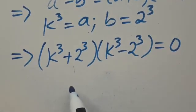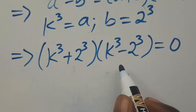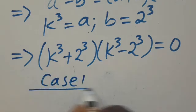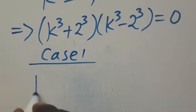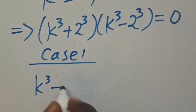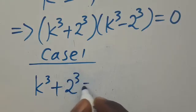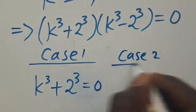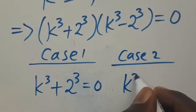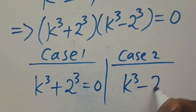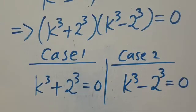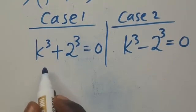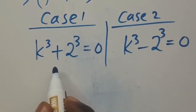What we are saying here is that for this particular expression to be equal to 0, it is either we have, Case 1: k to the power of 30 plus 2 to the power of 30 equals 0, or Case 2: k to the power of 30 minus 2 to the power of 30 equals 0. Let's deal with Case 1 first. We have this to be the sum of two cubes.